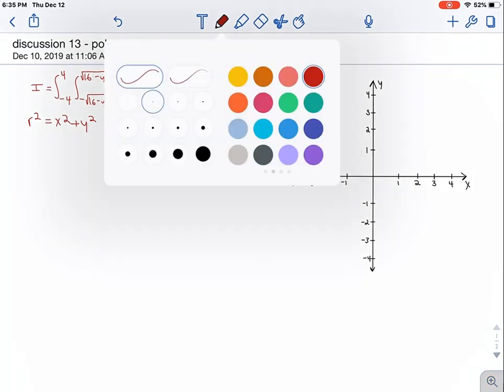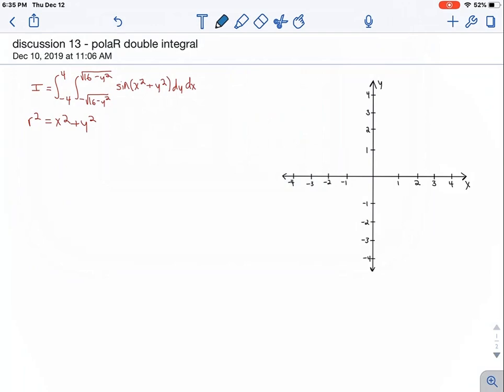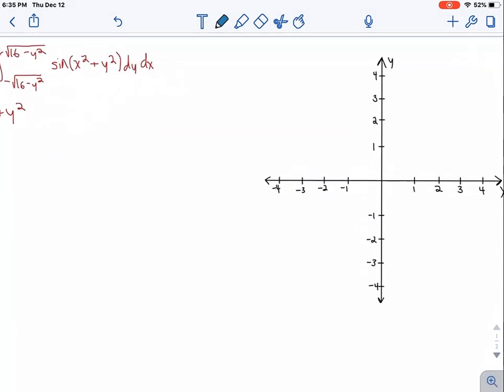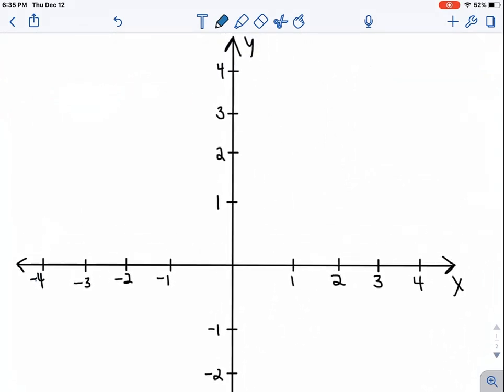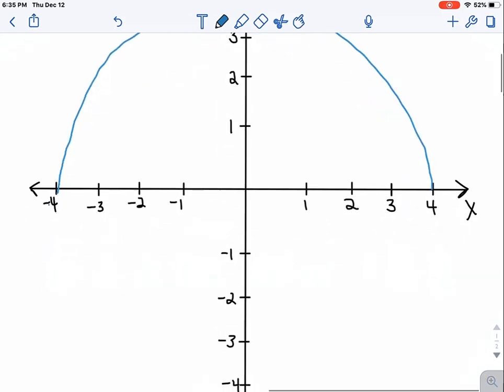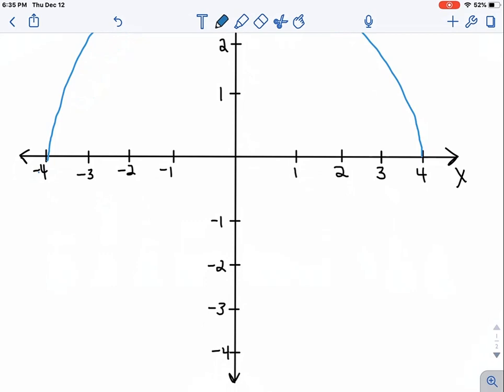I'm going to draw the region, just so it's easier to see what we're integrating over. The first bound, y equals the square root of 16 minus x squared, is just this semicircle with a radius of 4. And the negative square root of 16 minus x squared is the bottom half of this circle.